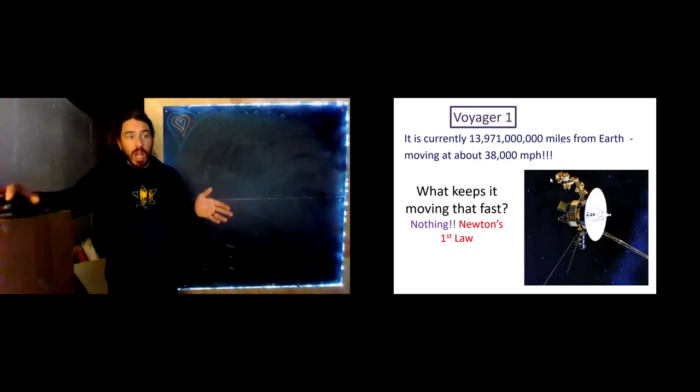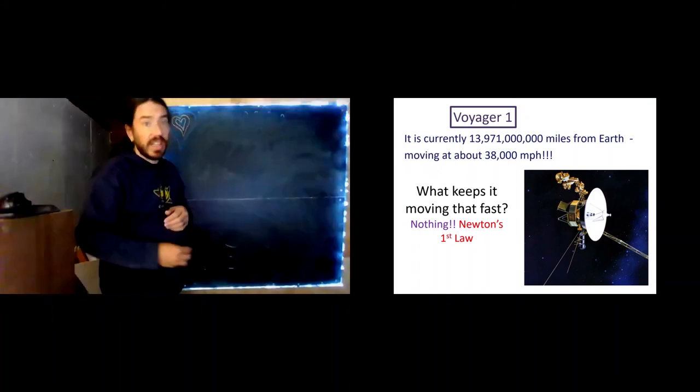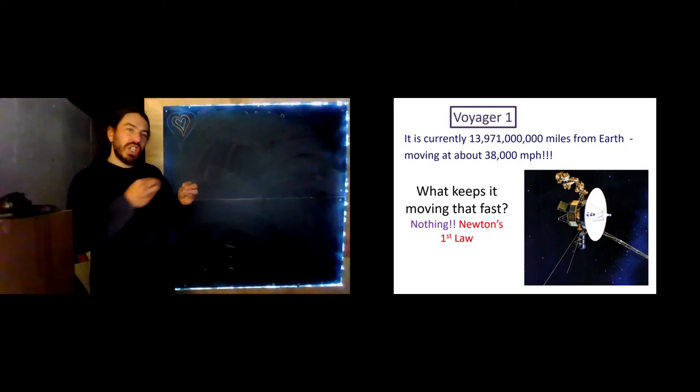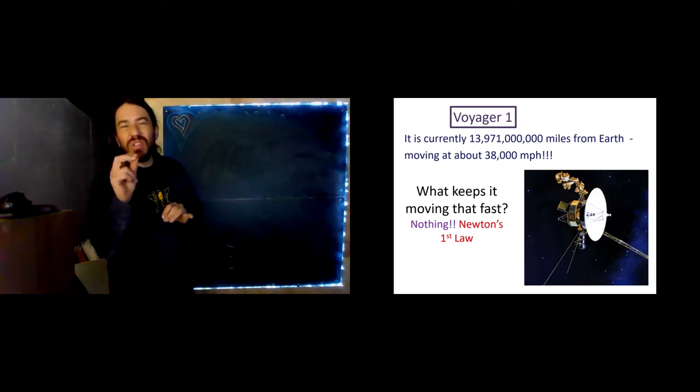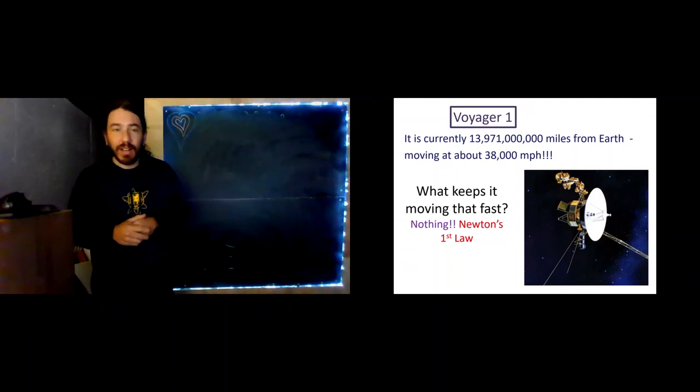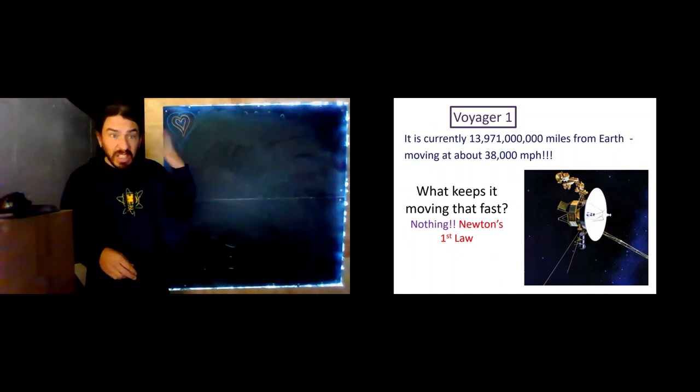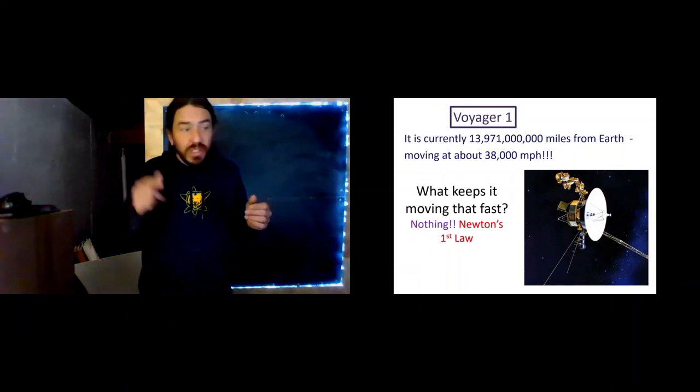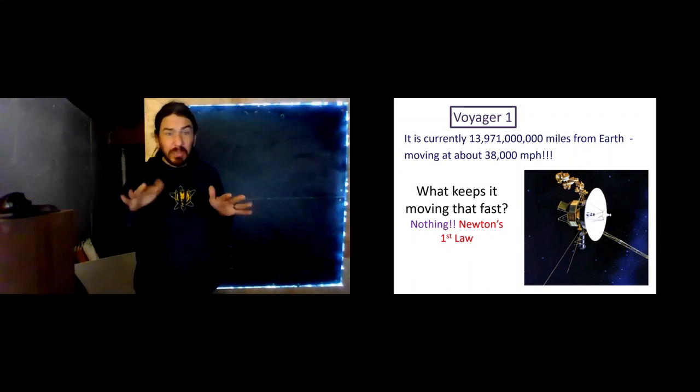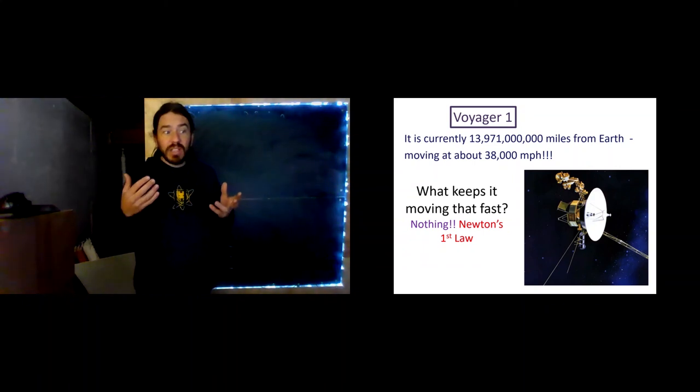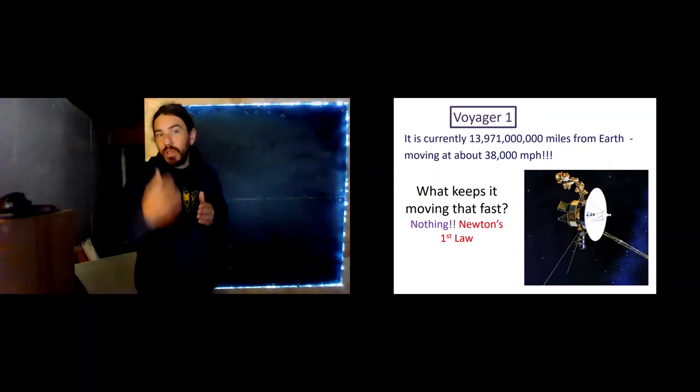So, what keeps it moving that fast? Well, nothing. Newton's first law. It got going that fast from some velocity that it was given when it was launched, from the rocket that took it up into space. And then, it did a couple of flybys of planets. You can do this thing called a gravitational assist, where it's basically a collision with a planet. If the planet's coming this way, and your satellite's coming this way, it does this. And you can actually, under ideal circumstances, almost double the speed of your satellite by doing that. But, that's a topic for Chapter 8. At any rate, it got going real fast years and years ago. And it's still just going that fast.